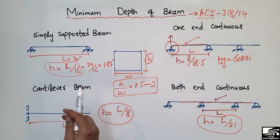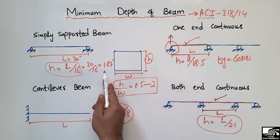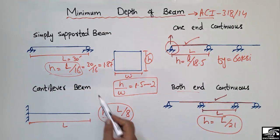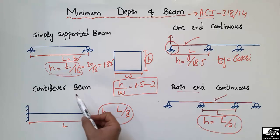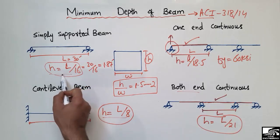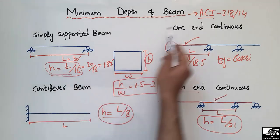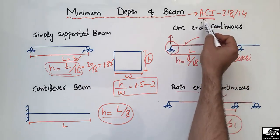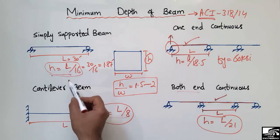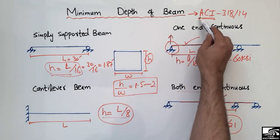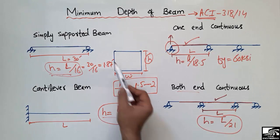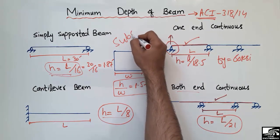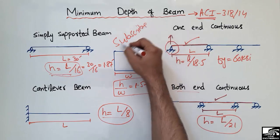These are the minimum depth requirements, and our assumed depth should always be greater than these minimums. Remember: you cannot interchange these formulas between different beam types. These formulas are specific to ACI codes — if you use other codes such as Euro codes, the formulas may differ. Thank you for watching, and don't forget to subscribe for more engineering videos.